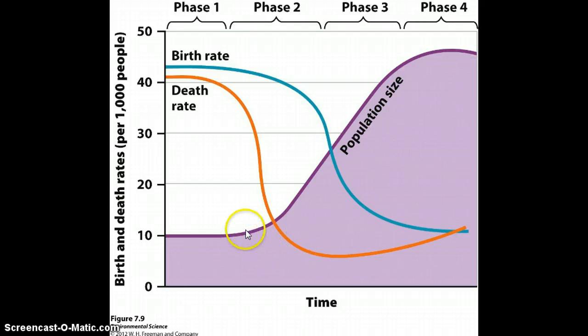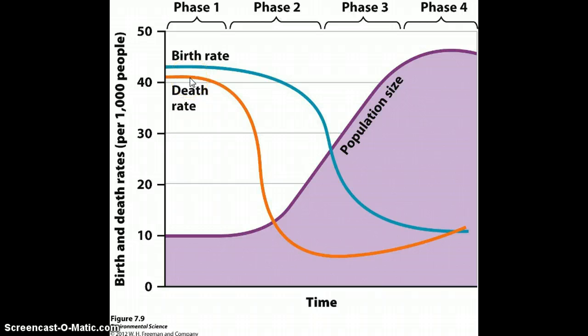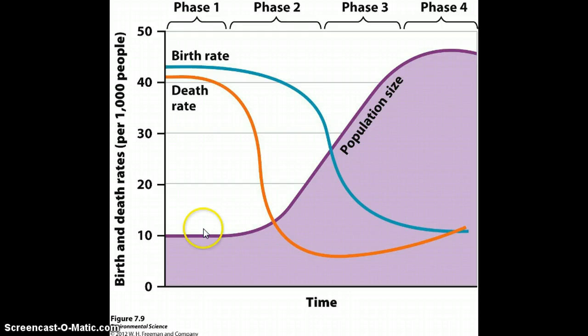The reason for that is when the country is pre-industrial here in phase one, both the birth rate and the death rate are going to be high, and that's going to result in a relatively stable population size with very slow growth.